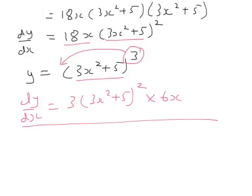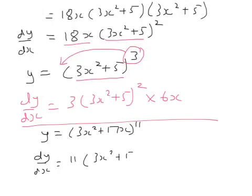In other words, let's do a different question. If y was 3x squared plus 17x to the power of 11, dy by dx would be 11 lots of 3x squared plus 17x to the power of 10. So the number power there comes down in front and reduces by 1. And then you multiply by 6x plus 17, because 6x plus 17 is the derivative of the contents of the bracket. In other words, differentiate the bracket. 3x squared plus 17x becomes 6x plus 17. So this rule is obviously much quicker than what we did on the previous slide.